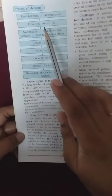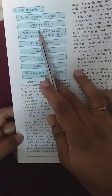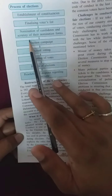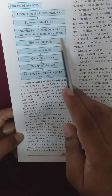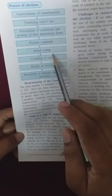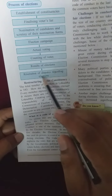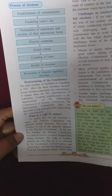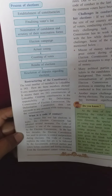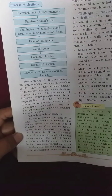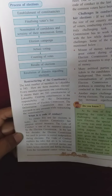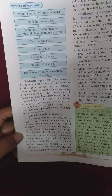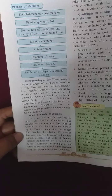The process of election includes: establishment of constituencies, finalizing the voters list, nomination of candidates and scrutiny of nomination forms, election campaign, actual voting, counting of votes, results of elections, and resolution of disputes. The total number of members in Lok Sabha is 543. Every member represents one constituency, so there are 543 constituencies. Creating constituencies is the responsibility of the delimitation commission.